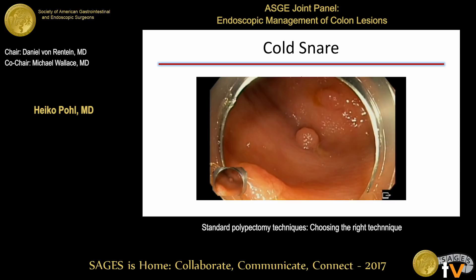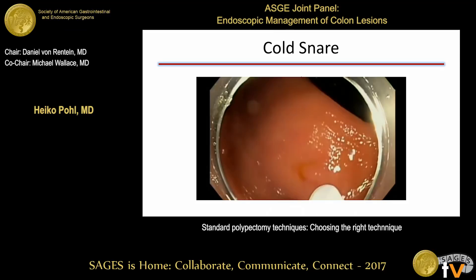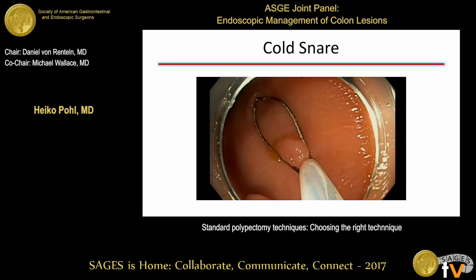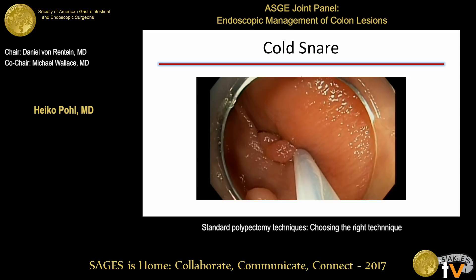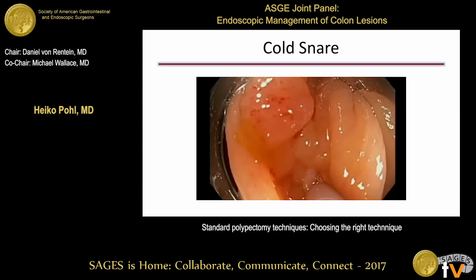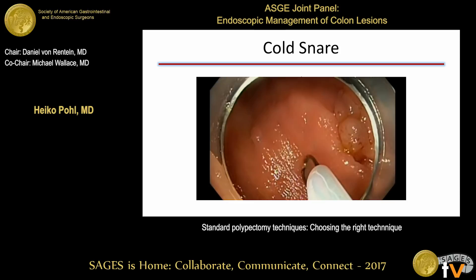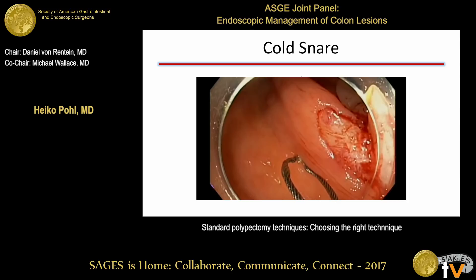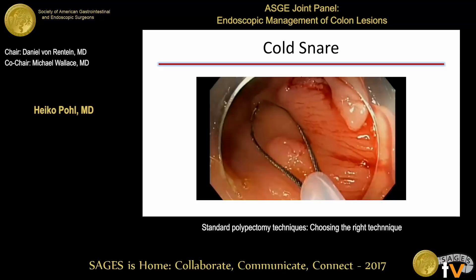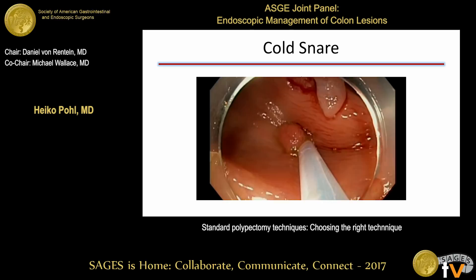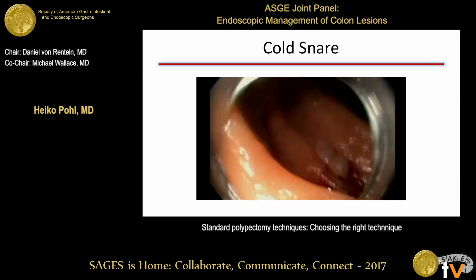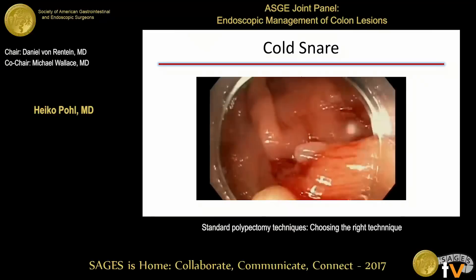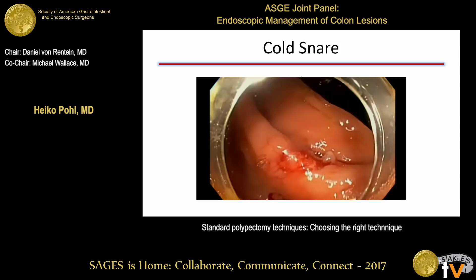Switching to cold snare polypectomy: the tip of the catheter is 2.4 millimeters, useful for estimating size—this polyp is just a little larger than the tip, so about three millimeters. The tip of the catheter is anchored at the base of the polyp about one millimeter away, ensuring a small healthy margin. The technique is a gentle push-and-close—you do not lift it off. Deploy the snare, anchor the tip one millimeter from the base, close, and you have a small healthy margin. Suction helps trap the polyp into the working channel.